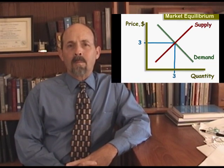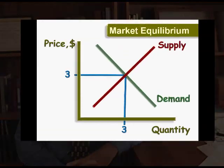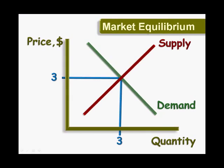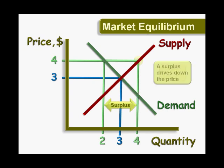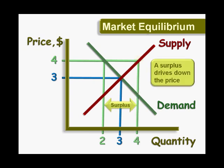If the current market price is above equilibrium, too much will be supplied. For example, if the price in this market is $4, consumers will demand two units, which is less than the four units firms want to sell. Thus, a surplus of two units results.